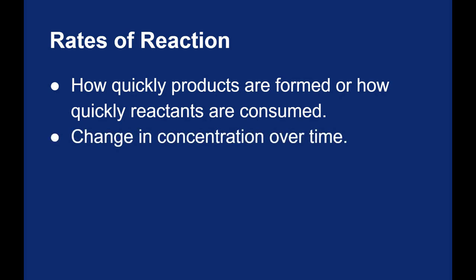Rates of reaction are measured by finding the change in concentration over time. When talking about the rates of reactions for forming a product, you'll get a positive rate because the change in concentration is increasing. When talking about the rate of reaction of a reactant, we'll get a negative rate because the change in concentration is decreasing.